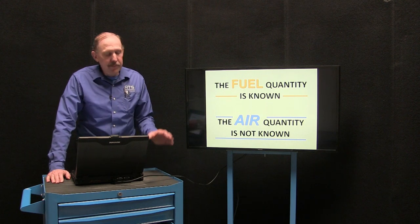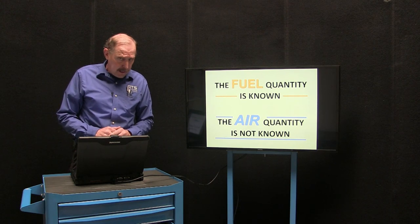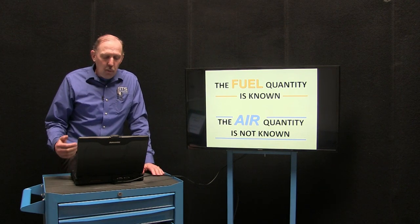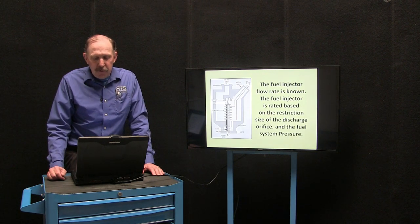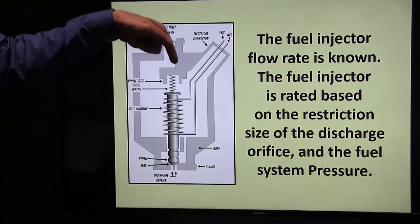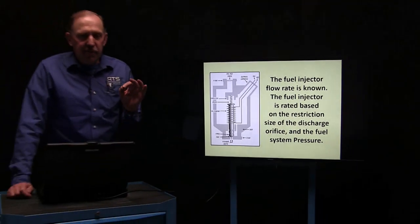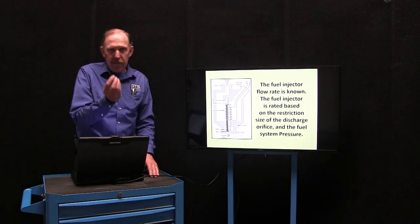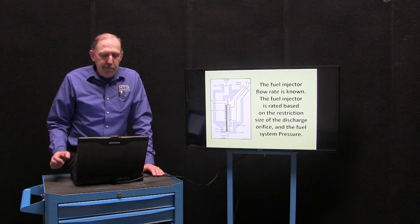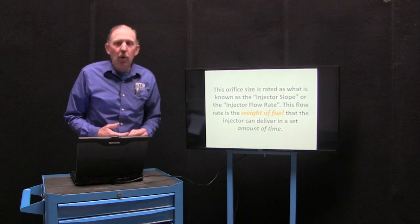The fuel quantity is known. The air quantity is not known. So this is a big difference. If I know the fuel quantity but I don't know the air quantity, we're going to need to run some algorithms and math so we can calculate how much air is entering the engine to control the fuel, timing, and all the other things. The fuel injector has a known flow rate created by these orifices at the bottom of the injector. If this pintle is moved up through an electromagnetic field, the fluid from the fuel pressure will force fluid through those slots. The fuel pressure, slot opening aperture, and hole diameter will set how much flow comes out of that injector.